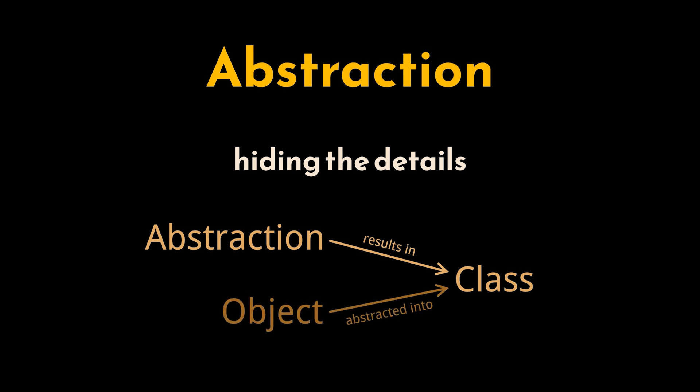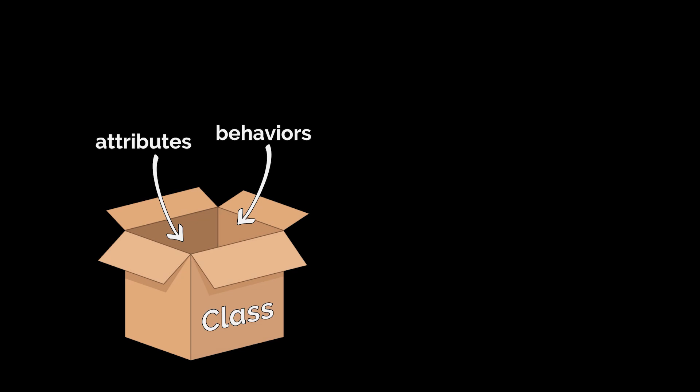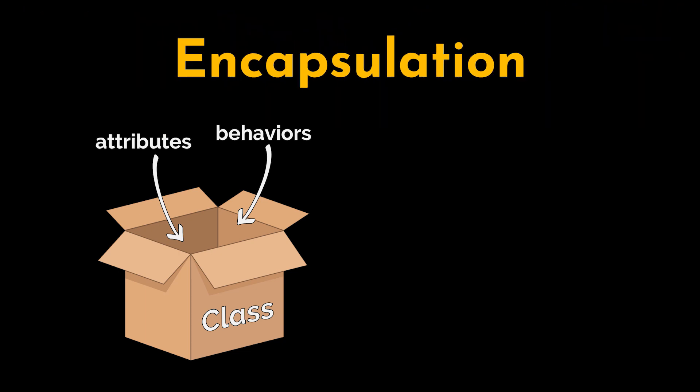Another thing we do while creating a class is take this information that describes our object—which are the attributes—and the things it can do—the behaviors—and encapsulate them, containerize them, in the same unit, the same class. And this in object-oriented programming is referred to as encapsulation.